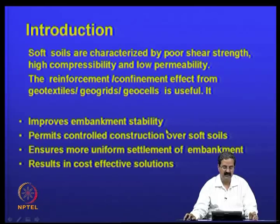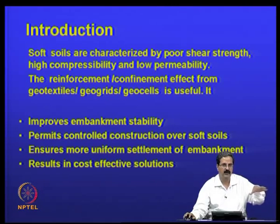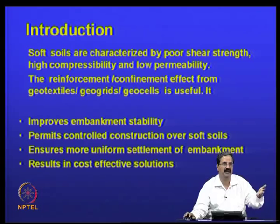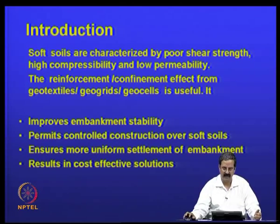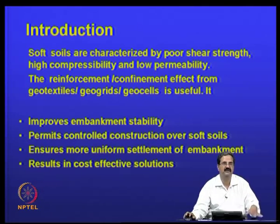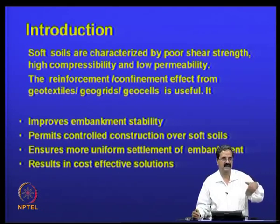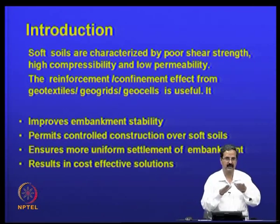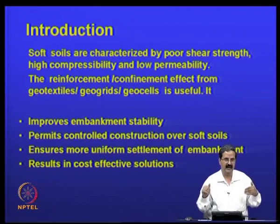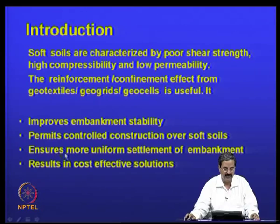It improves the stability of the embankment and permits controlled construction over soft soils. In many soft soil areas, when you bring in sand and start constructing an embankment on the soft soil, there is always a loss of embankment material — sometimes 20 to 30 percent. If you have a geotextile at the interface, that mixing of soil and sand is prevented, and one can properly account for how much sand is used and what the settlement in the clay is.